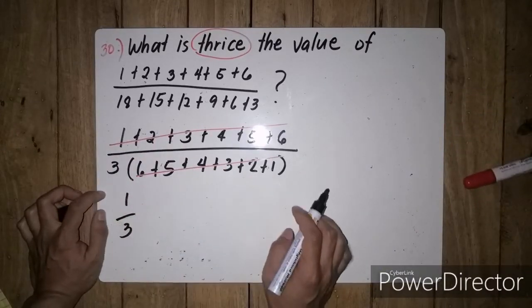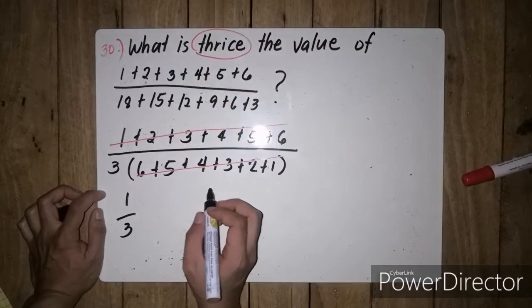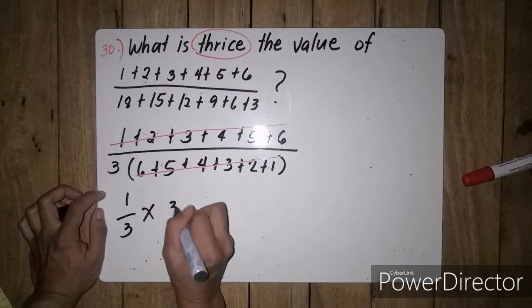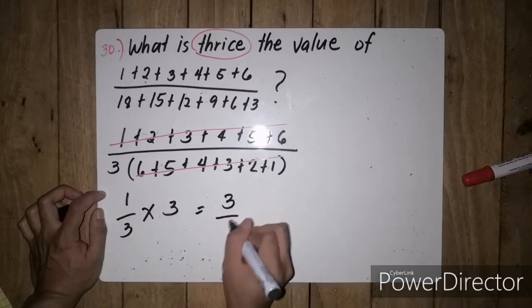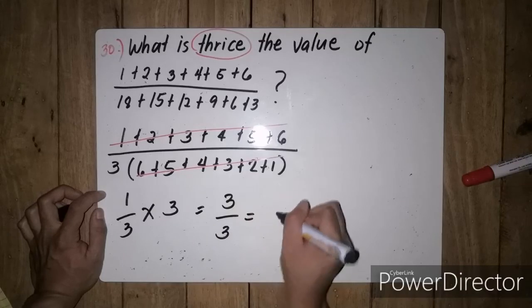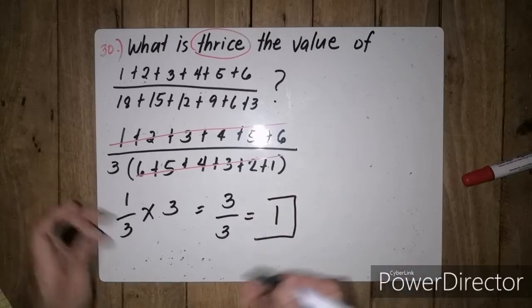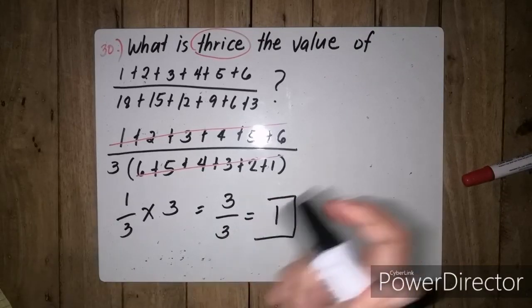But, the question is asking thrice. So, we are going to multiply 1 third by 3 times 3. Giving us 1 times 3, 3 over 3. 3 divided by 3 is 1. So, our answer for this problem is 1.